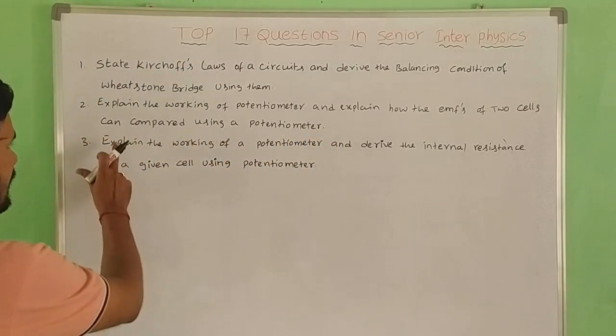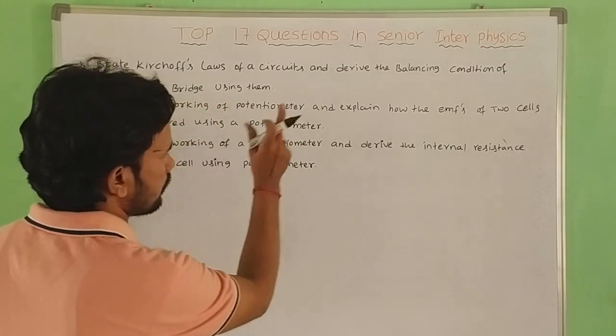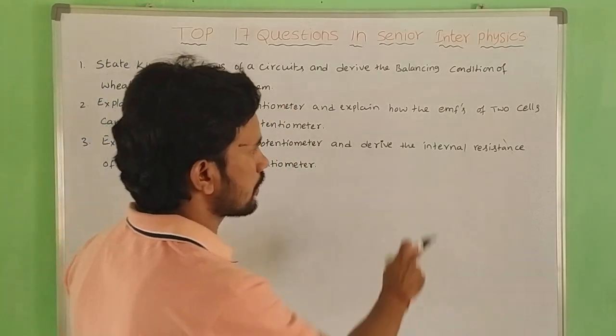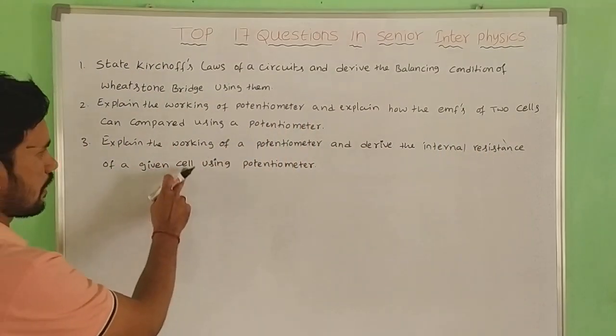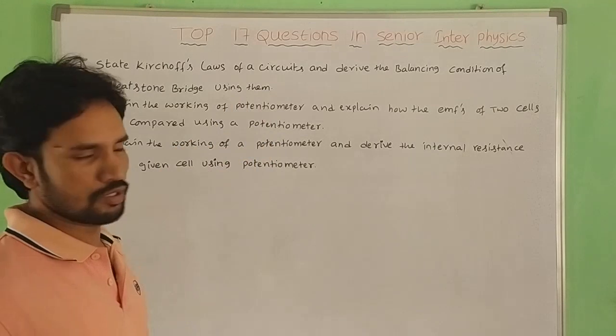Next, third one: Explain the working of potentiometer and derive the internal resistance of a given cell using potentiometer.